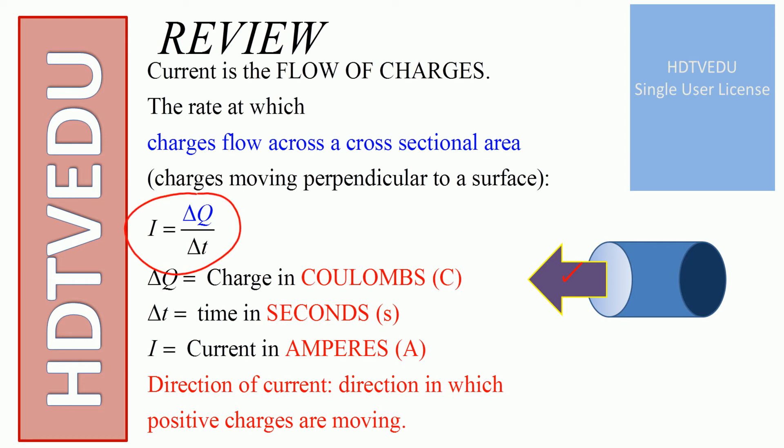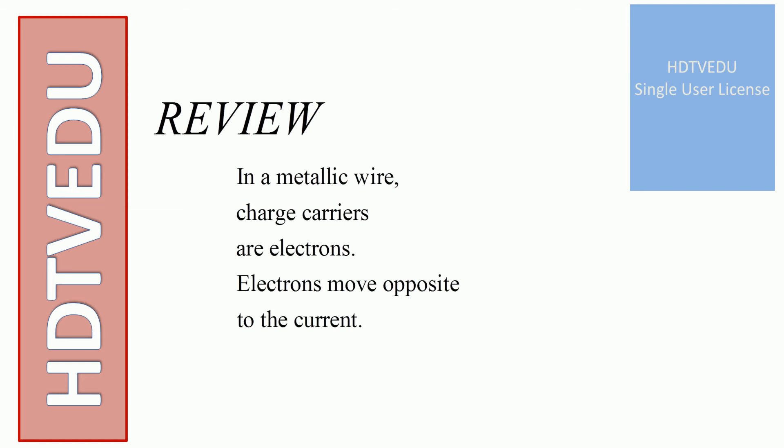What is delta Q? Charge in coulombs, capital C. What is delta T? Time in seconds. What is I? Current in amperes. Direction of current is direction in which positive charges are moving. In a metallic wire, charge carriers are electrons. Electrons move opposite to the current.